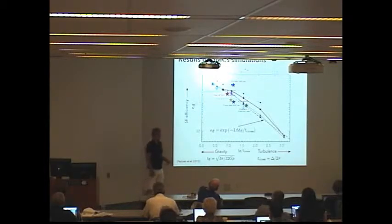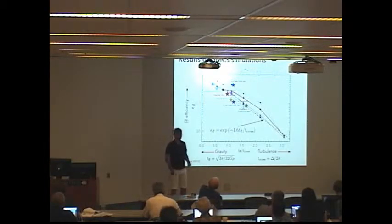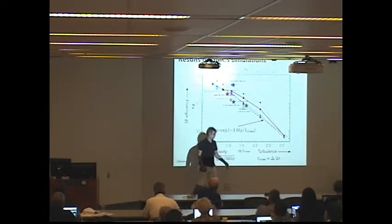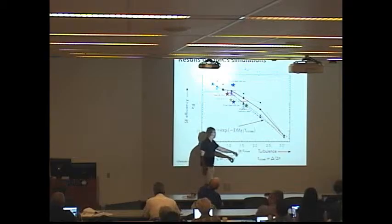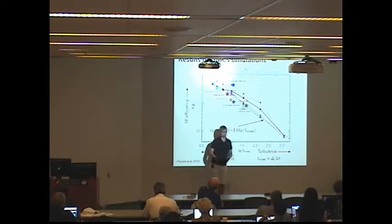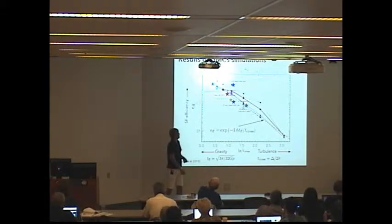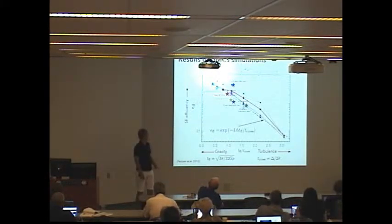Similar simulations done by other authors basically agrees with this general trend. This model tells us that efficiency does vary with varying turbulent properties of GMCs. This model, in principle, can be implemented in galaxy formation simulations if we had some knowledge about turbulence on scales of GMC. Free-fall time is easily accessible because it depends only on density.